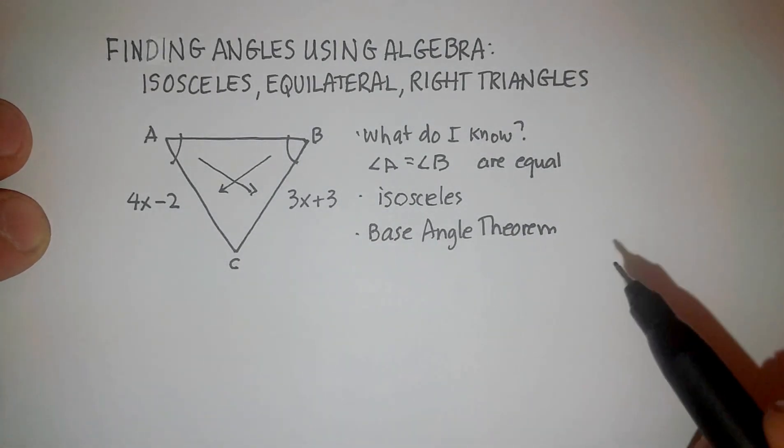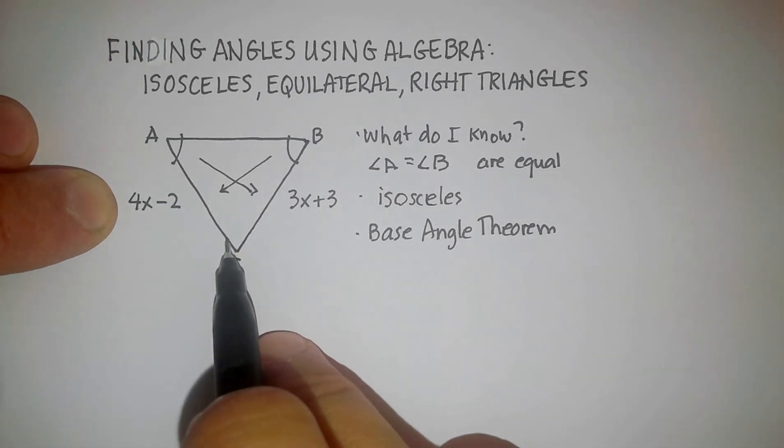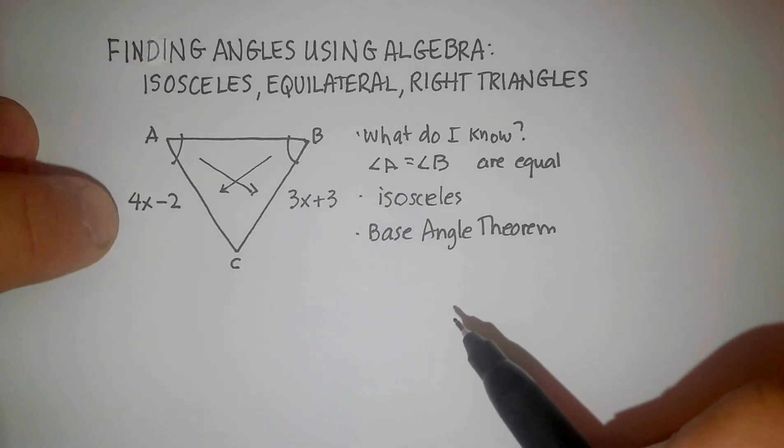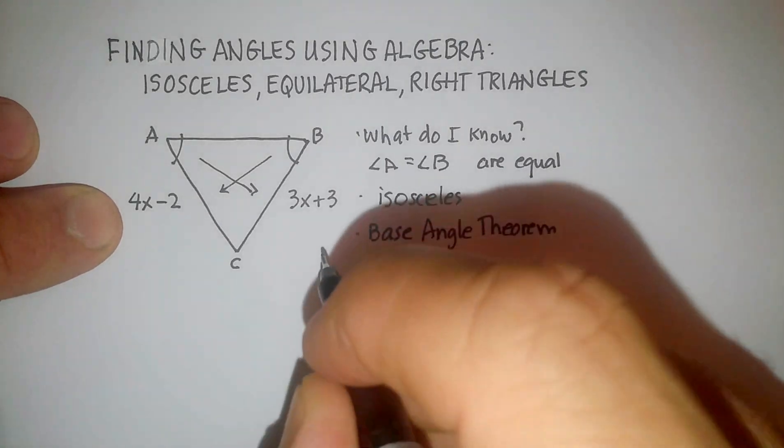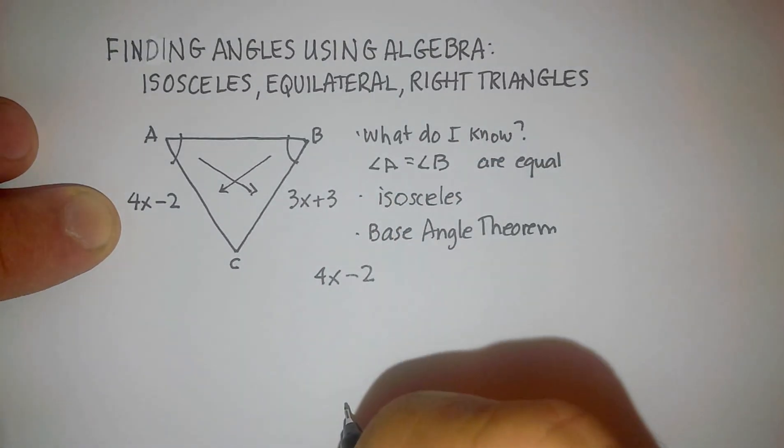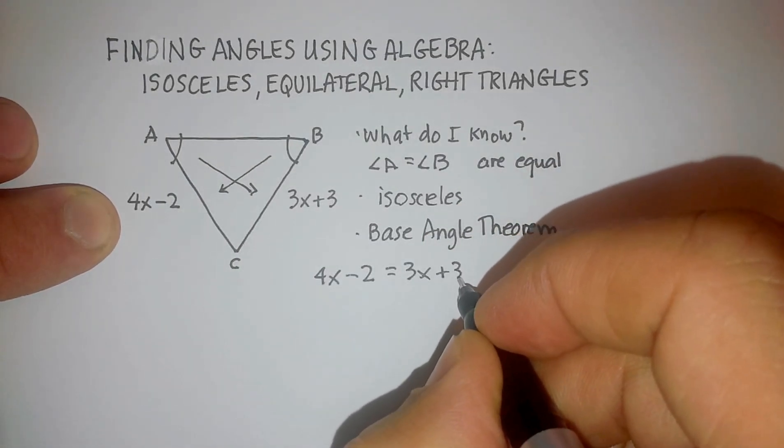So what does that tell me here? That basically tells me 4x minus 2, this side, is equal to 3x plus 3. So now I can actually start solving this problem and solving for the x. So 4x minus 2 is equal to 3x plus 3.